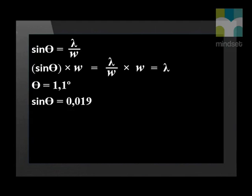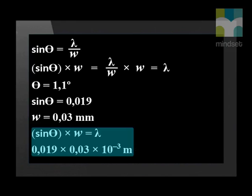For yellow light, this angle theta is only one degree. Your scientific calculator will show you that the sine of 1.1 degrees is 0.019. The slit is very, very narrow at 0.03 millimeters.